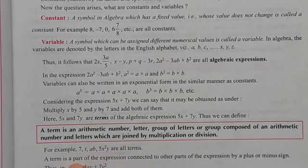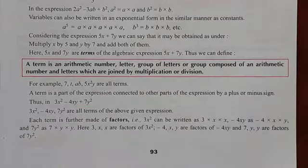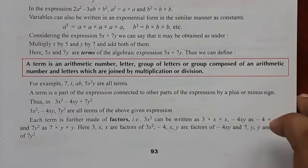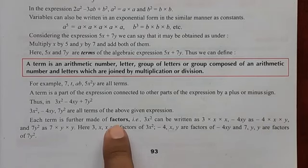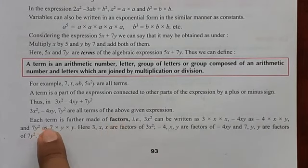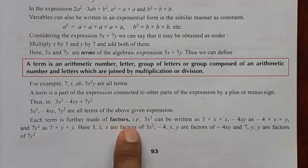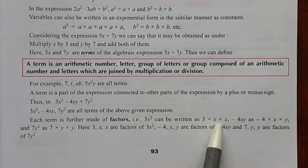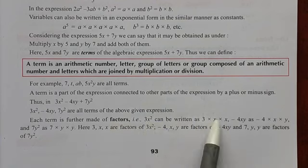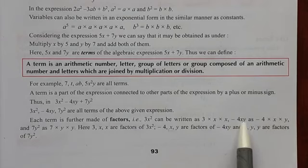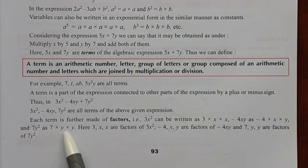How does a term get factorized? Each term is further made of factors. For example, 3X squared can be written as 3 into X into X — here 3, X and X are all factors of 3X squared. Similarly, minus 4XY can be written as minus 4 into X into Y, and 7Y squared can be written as 7 into Y into Y.